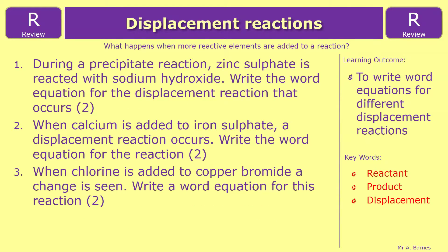Now for three review questions. Question one: during a precipitation reaction, zinc sulfate is reacted with sodium hydroxide — write the word equation. Question two: when calcium is added to iron sulfate a displacement reaction occurs — write the word equation. Question three: when chlorine is added to copper bromide a change is seen — write the word equation.